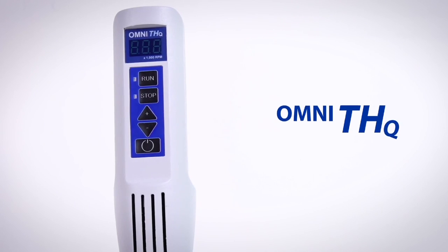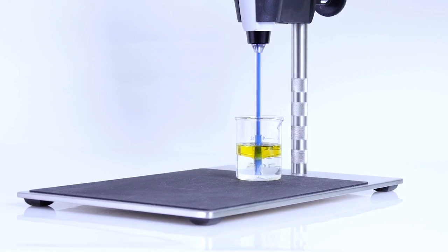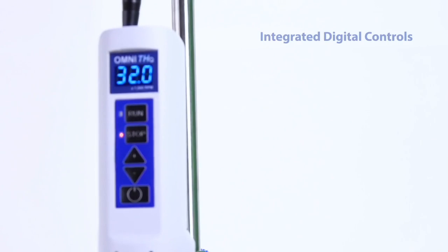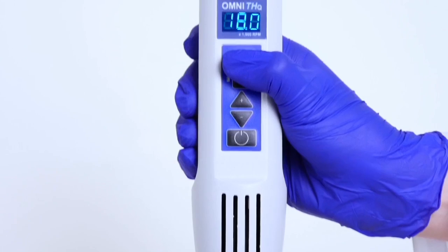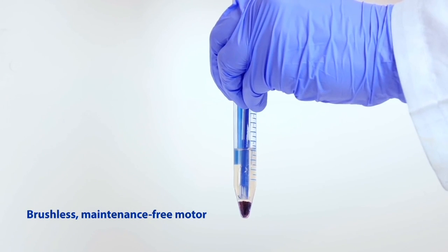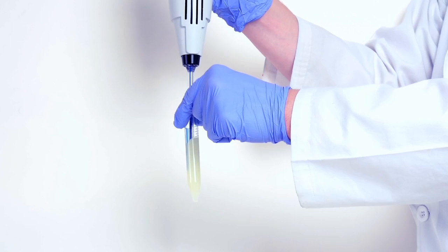The Omni THQ digital tissue homogenizer ensures ultimate repeatability for standardized applications within the lab. The integrated digital controls provide accurate results for each cycle, and the brushless, maintenance-free motor incorporates constant speed feedback, enabling it to maintain set speed throughout sample processing.